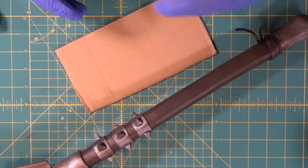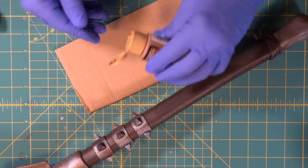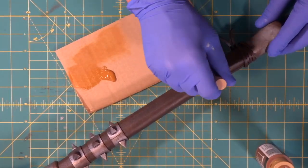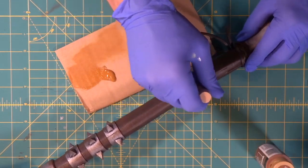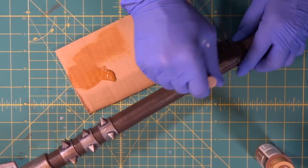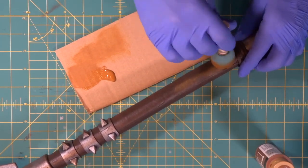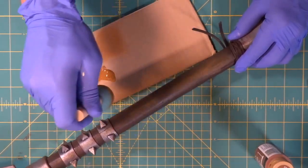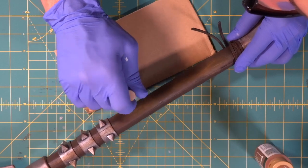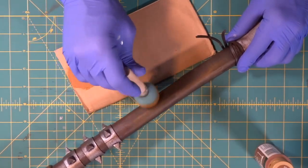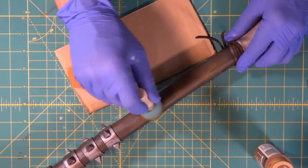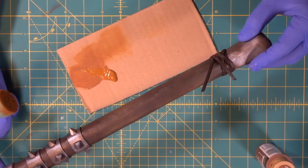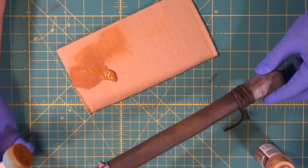All right, now we're going to come in with our raw sienna, which is a lighter brown than what we just used. Get it dry. There we go, just a slight little variation in some of the wood.